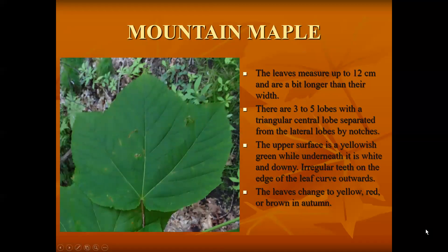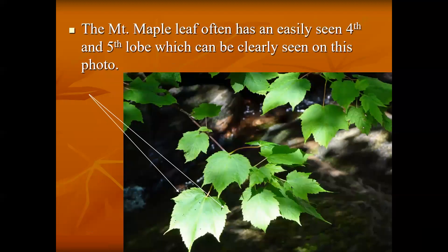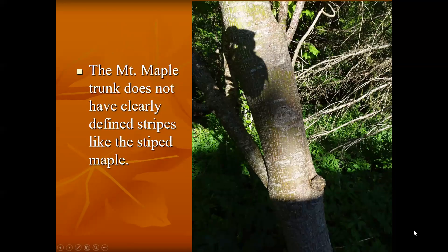Mountain maple looks like a striped maple except the side lobes are not as distinct and it's quite a bit wider at the base. Sometimes it will have another lobe near the bottom, but you can't count on that for all of them. In some leaves the lobes are quite distinct, but in others they won't be as distinct. Mountain maple does not have any clearly defined stripes like the striped maple.